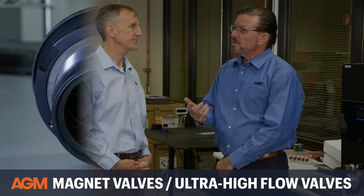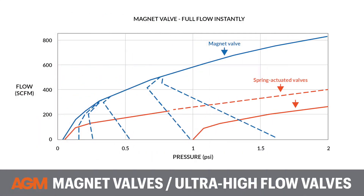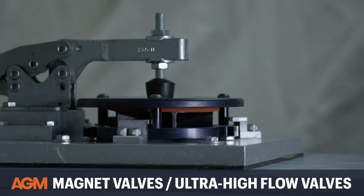So why would a person choose a magnet valve over a traditional breather valve? A magnet valve has a lot more airflow than a traditional breather valve, so it can exhaust a pressure differential inside a container much more quickly. This is especially important for rapid decompression events.